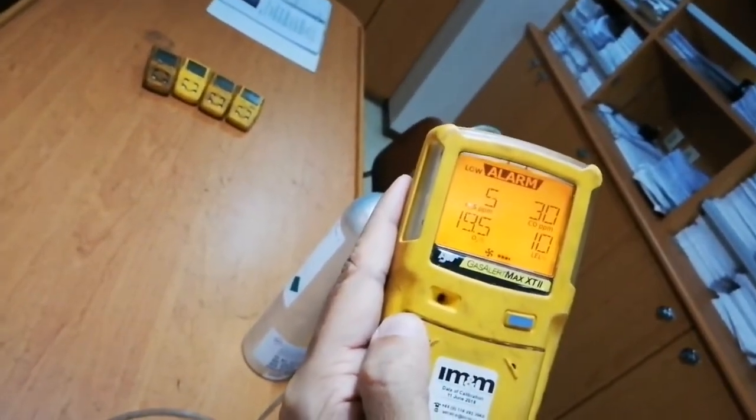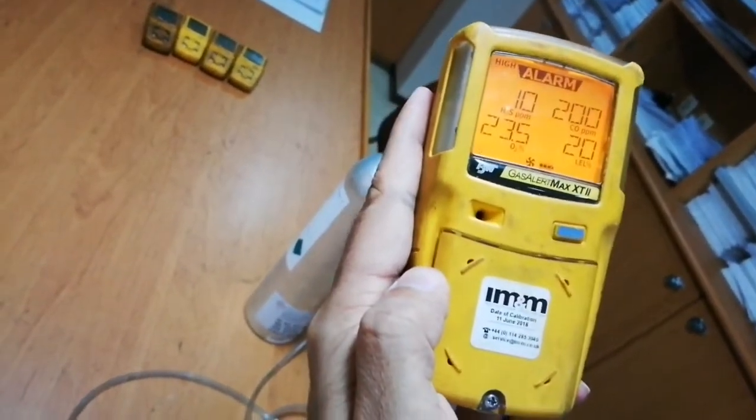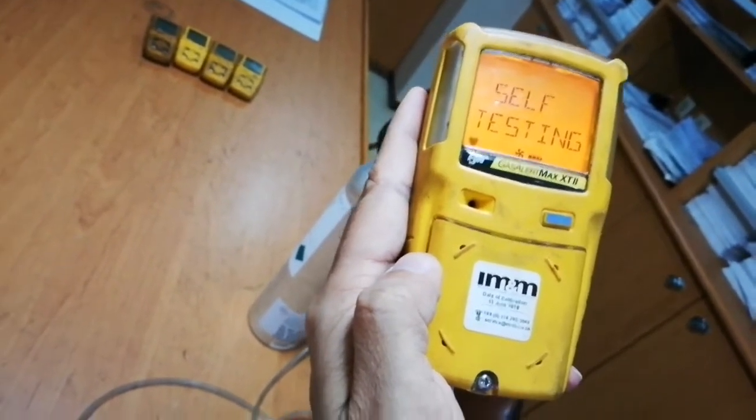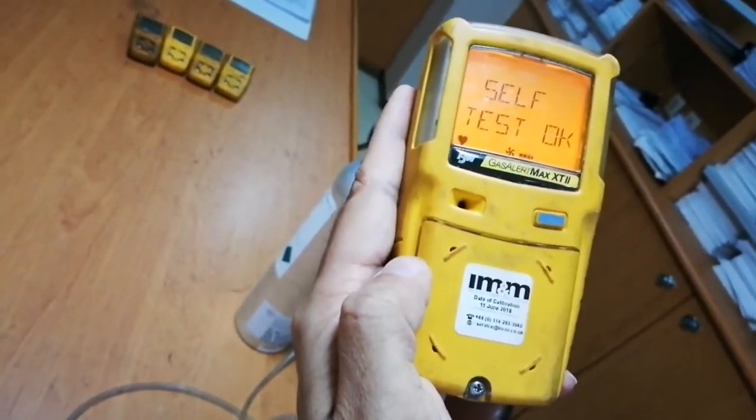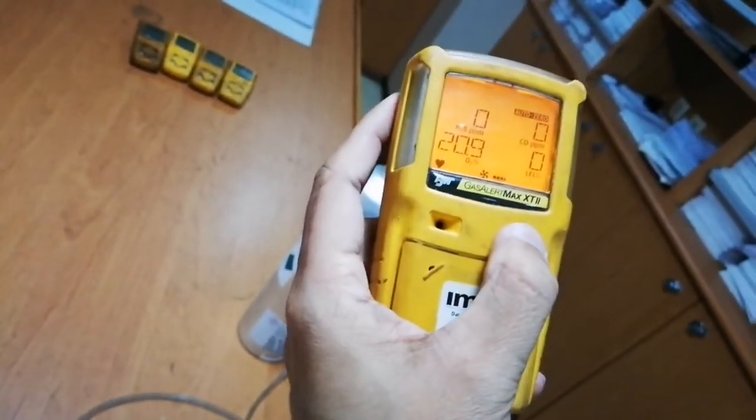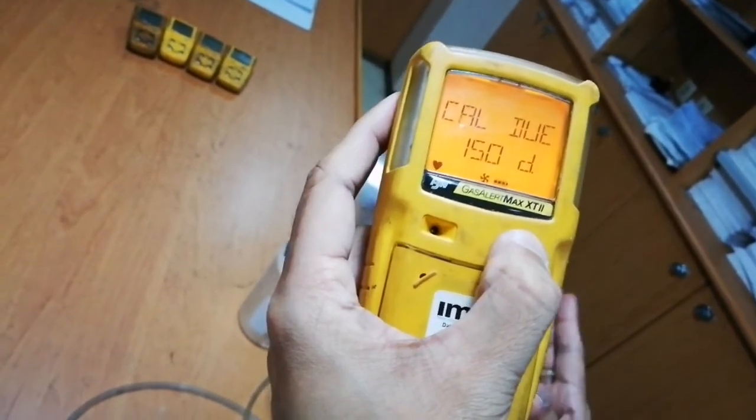Normally, once we've done this calibration, it will be valid for 180 days, so every six months we have to do the calibration. But it depends on your company policy. As per my company policy, every month I have to do the calibration test.